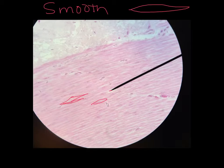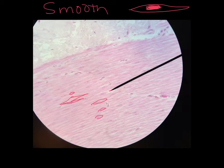Another characteristic to look for is the centrally located nucleus. They're not always perfectly central, but usually they are. Looking at some of these nuclei, you can see that more or less they are located centrally in the cell. There is also only one nucleus per cell, though that can be hard to confirm on a slide.